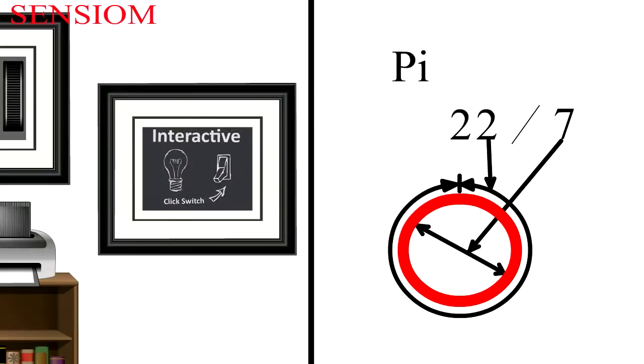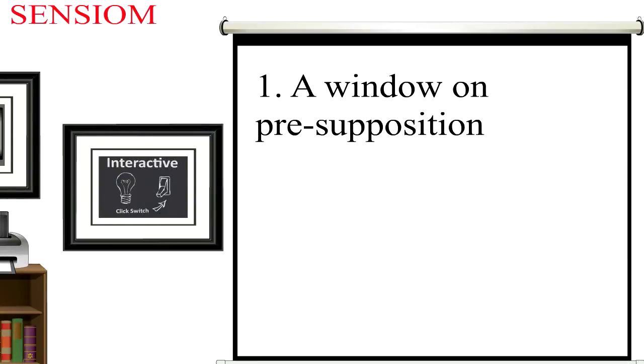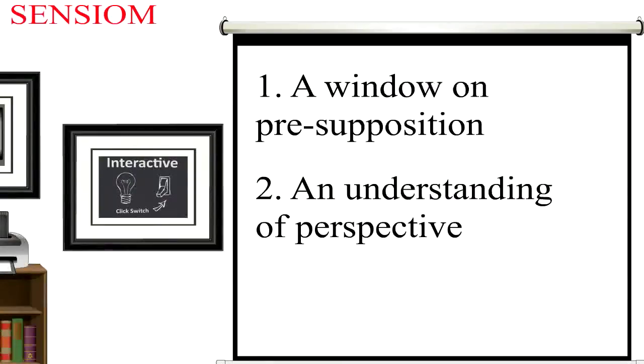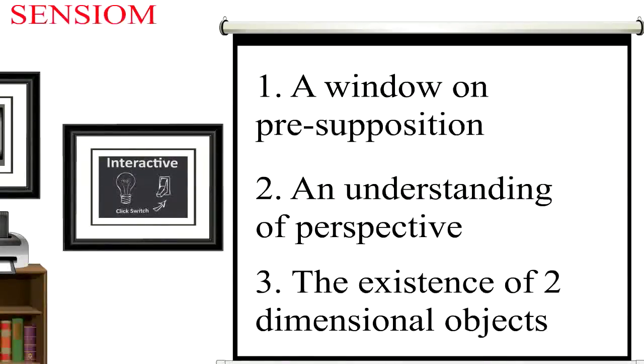We will provide three things to solve the problem: one, a window on presupposition; two, an understanding of perspective; and three, the existence of two-dimensional objects.